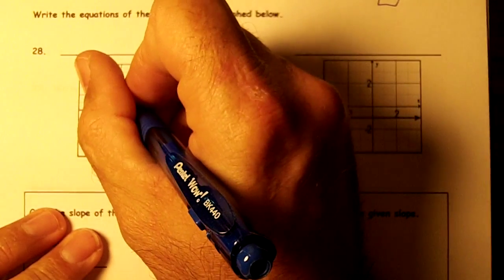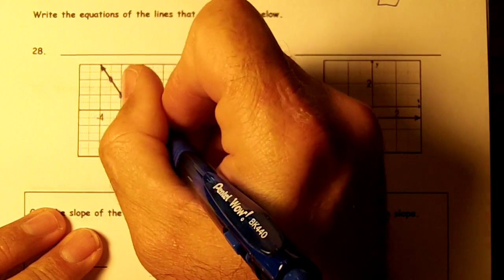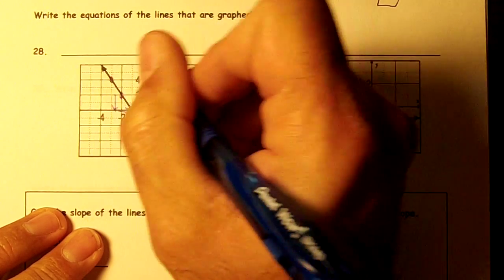And let's find our grid points. It goes through here, here, here. So we're going down 2 over 1, aren't we?